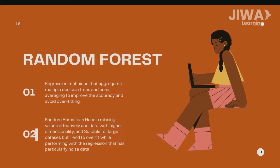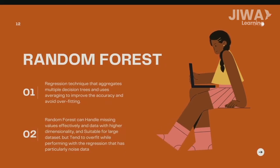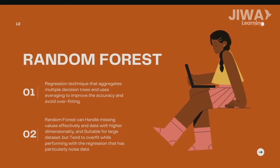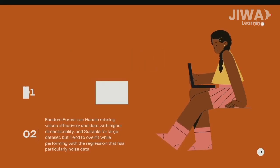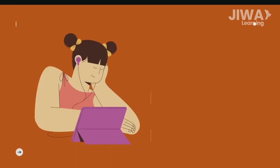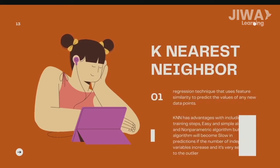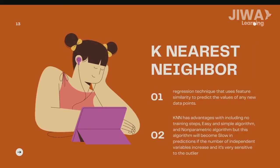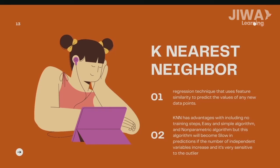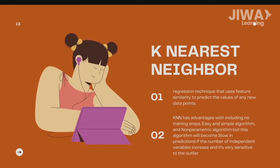Random forest is a regression technique that aggregates multiple decision trees and uses averaging to improve accuracy and avoid overfitting. KNN is a regression technique that uses feature similarity to predict the values of any new data points.